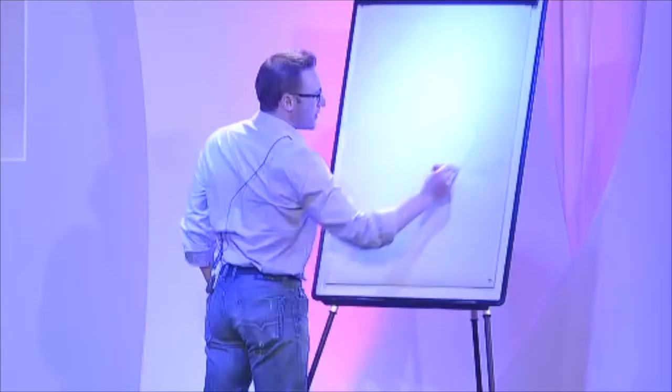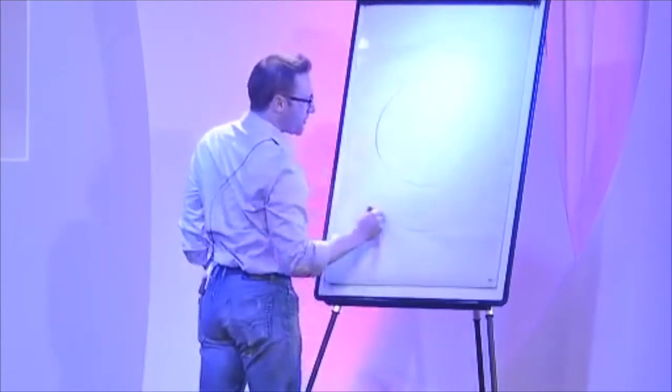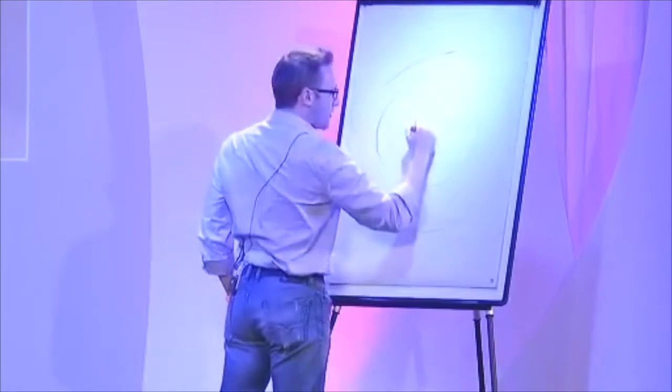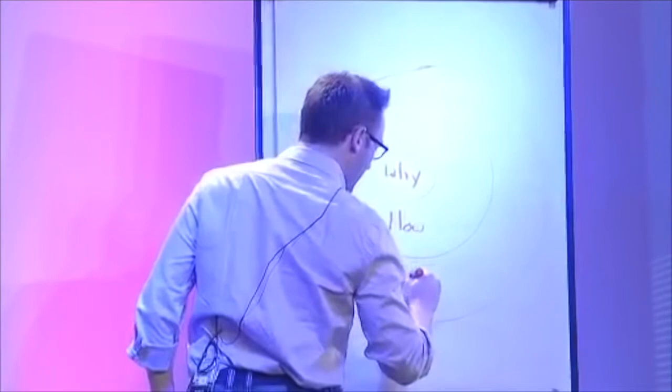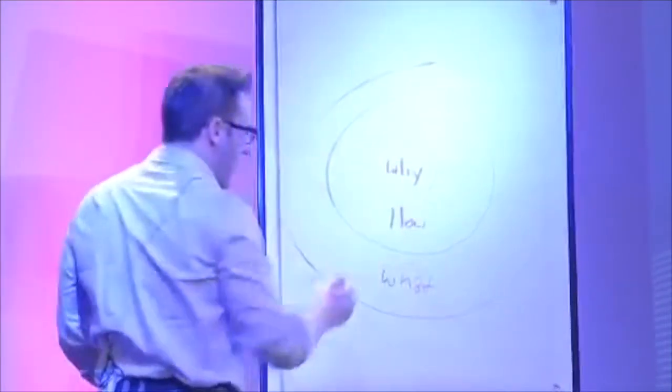I call it the golden circle. It's three concentric circles, a bullseye. In the middle is why, the center ring is how, and the outside ring is what. Why, how, what.